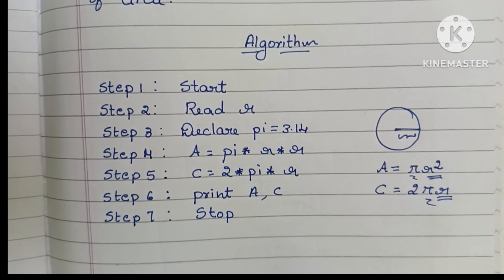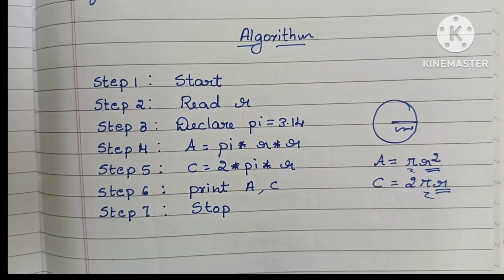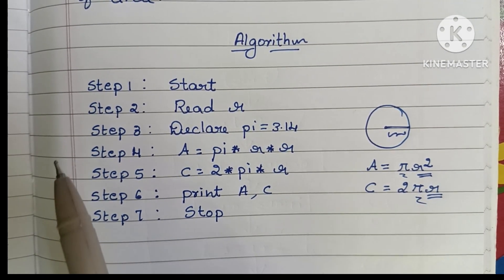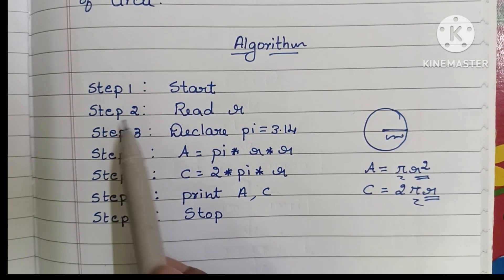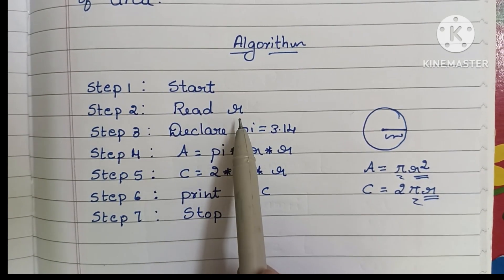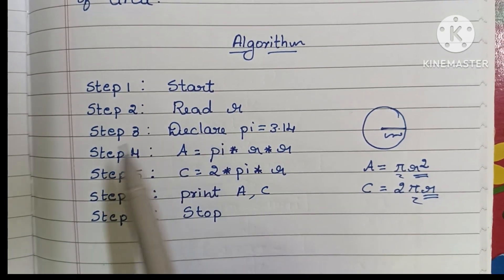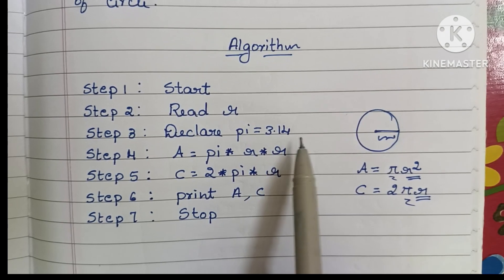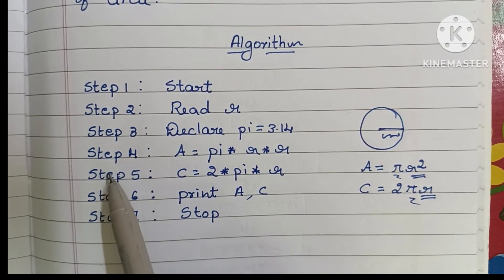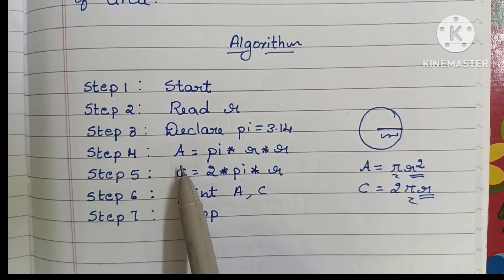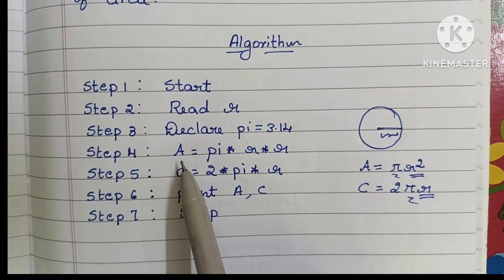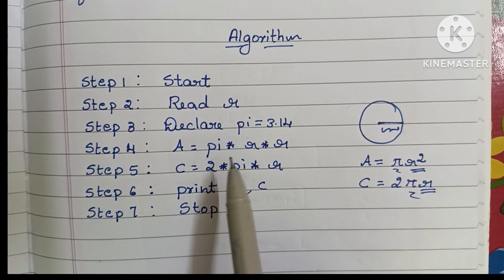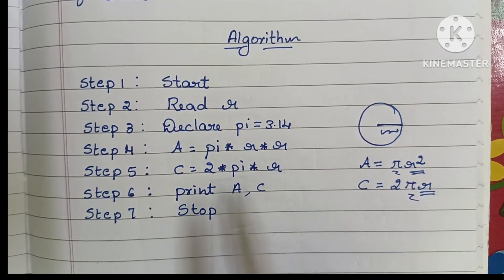So this is the algorithm to find area and circumference of a circle. Step 1: start. Step 2: read the radius value. Step 3: declare pi is equal to 3.14. Step 4: write the formula to find area of circle — A is equal to pi into r into r.